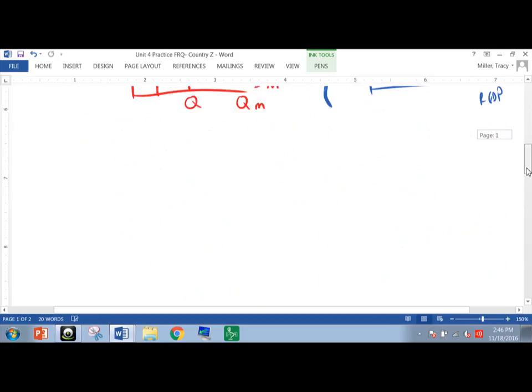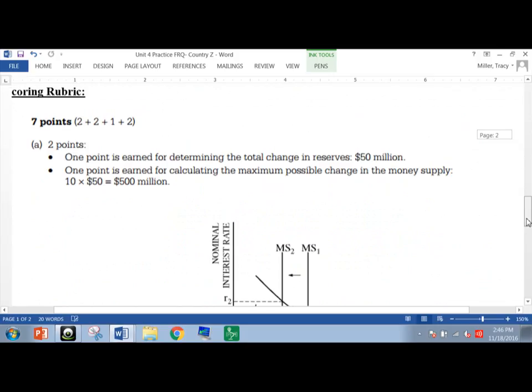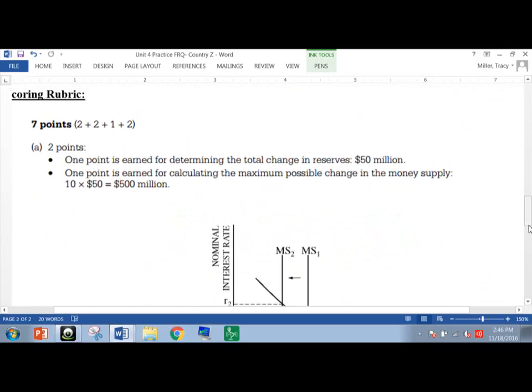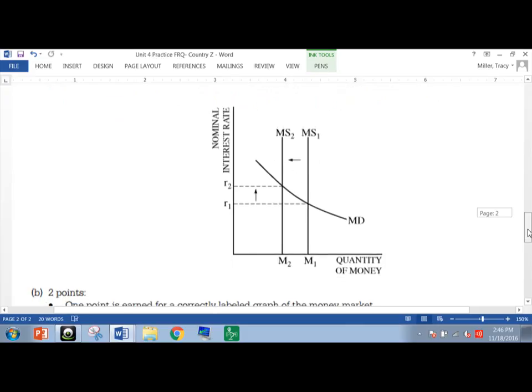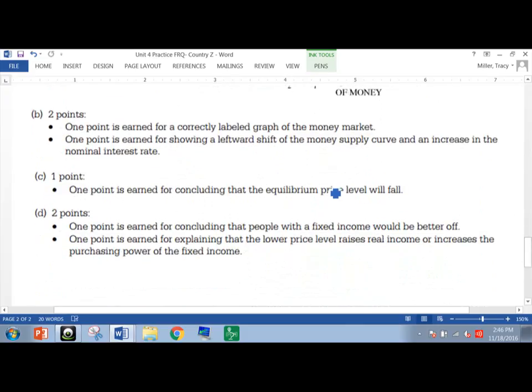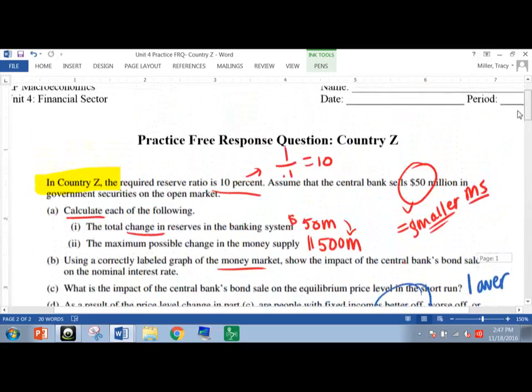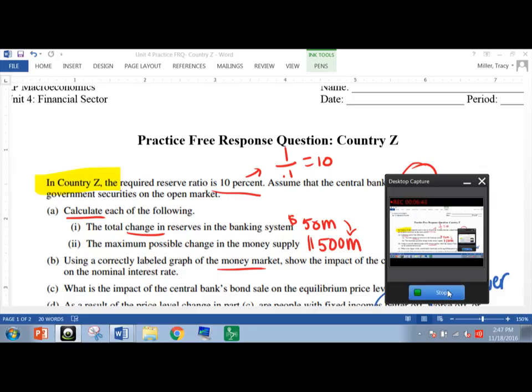So I'm going to scroll down to the rubric like I did before with the other question. You might have to pause. But this is what we're looking for. $50,500,000. Money market graph. And then lastly, your explanations about the price level falling, fixed income, and an acceptable explanation for that. So if anything was fuzzy or you need to go back and look at it again, pause, go back, re-listen, re-read. Talk to you soon.